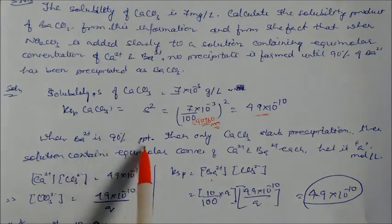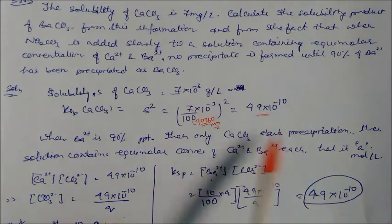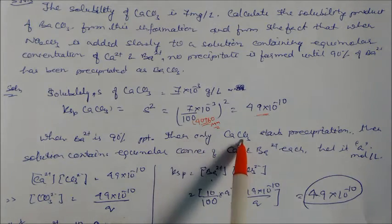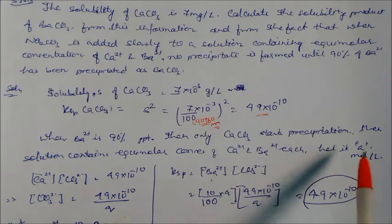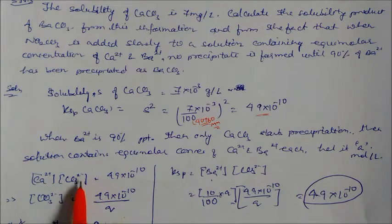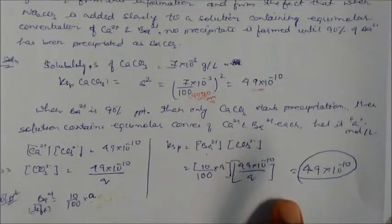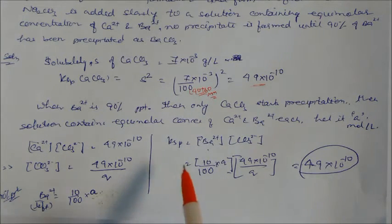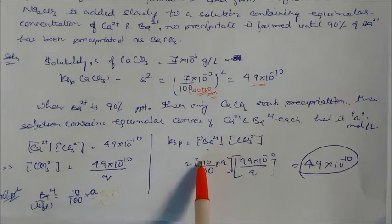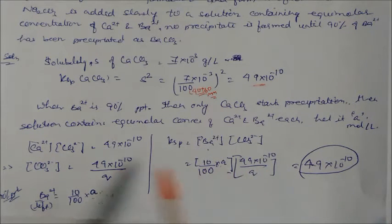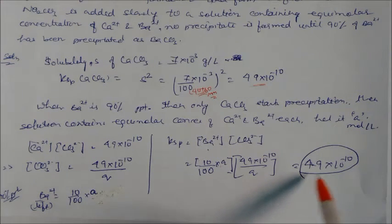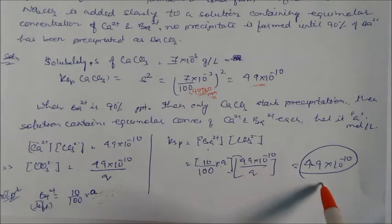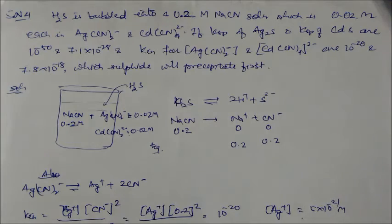Since 90% of barium is precipitated, 10% remains in solution. When calcium carbonate starts to precipitate, the solution contains equimolar concentrations of calcium, denoted as 'a' mol/L. The carbonate concentration is Ksp(CaCO₃) divided by 'a'. The barium remaining is 10% of 'a', i.e., (10/100) × a. Therefore the Ksp of barium carbonate = [Ba²⁺][CO₃²⁻] = (0.1a) × (Ksp(CaCO₃)/a), which simplifies to 0.1 × Ksp(CaCO₃).